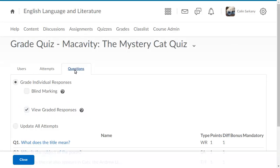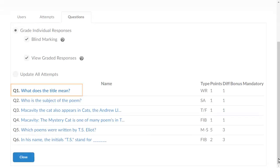For this example, select Blind Marking, and then navigate to and click the question you want to grade.